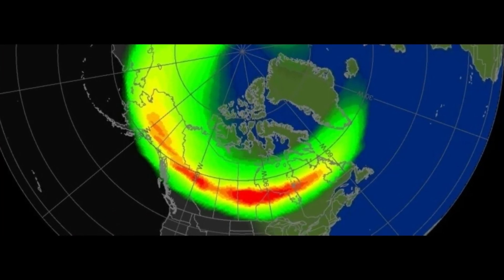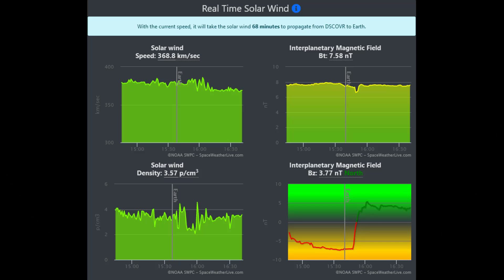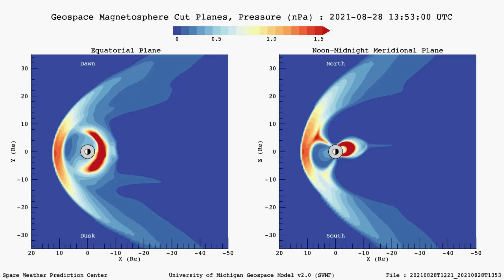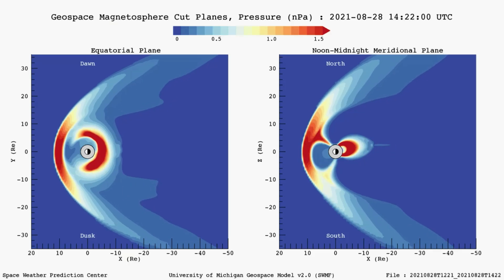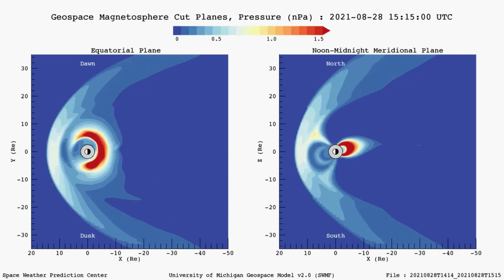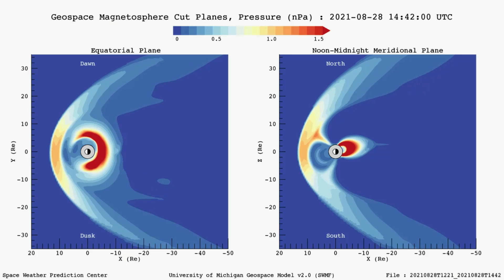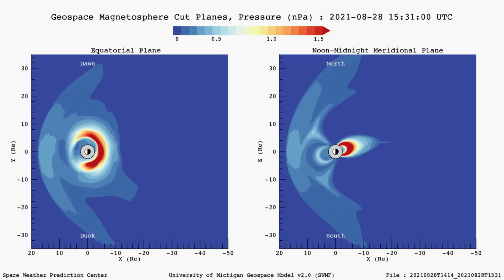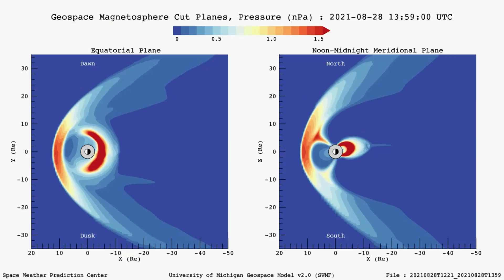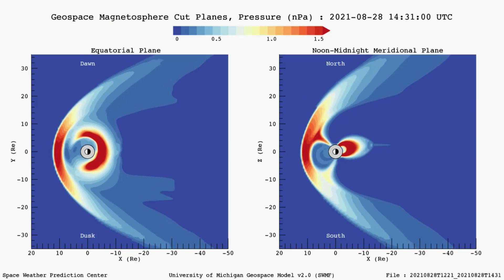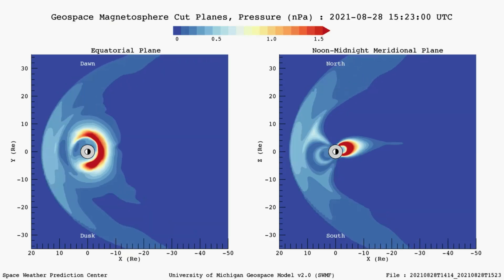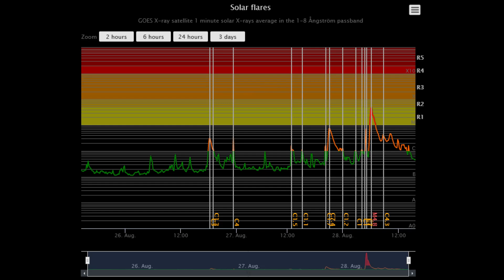Type 2 and Type 4 radio emissions were associated with the solar flare, suggesting the event was eruptive. Due to the location of sunspot region 2860, it is very likely that the resulting coronal mass ejection has an earth-directed component.